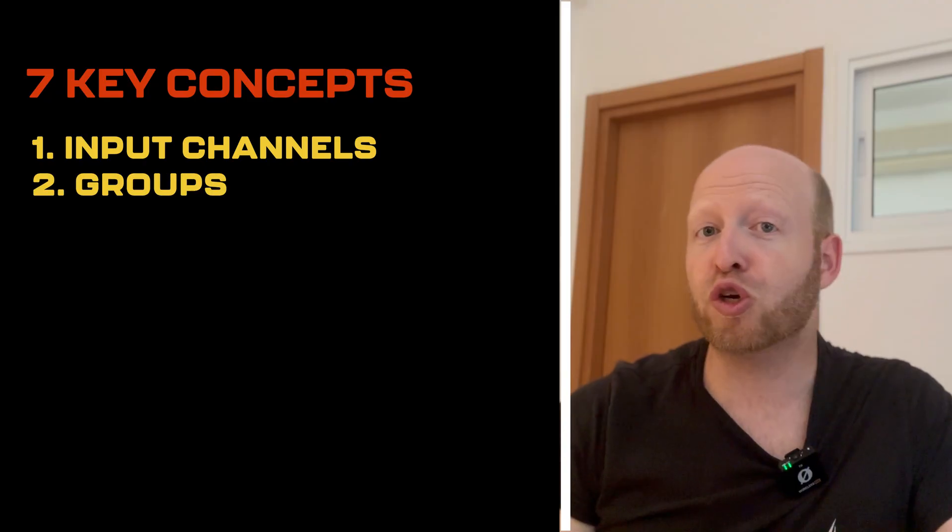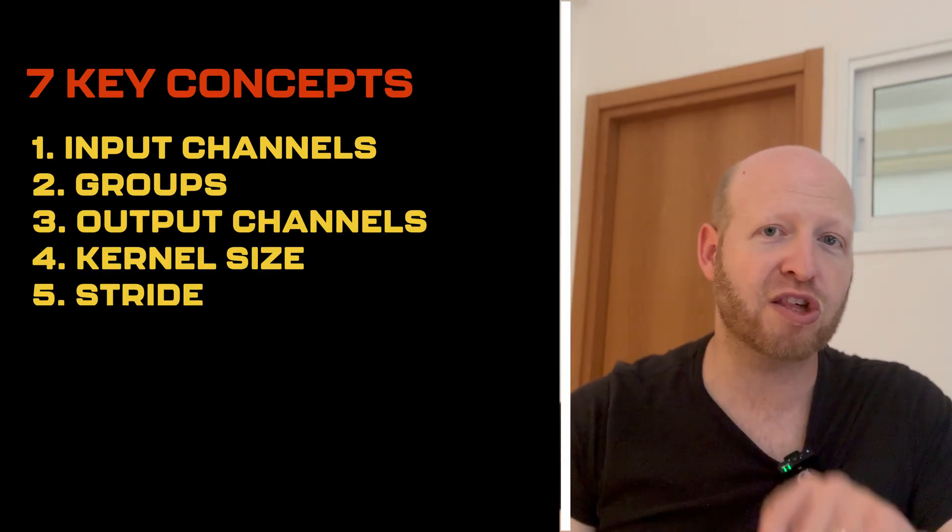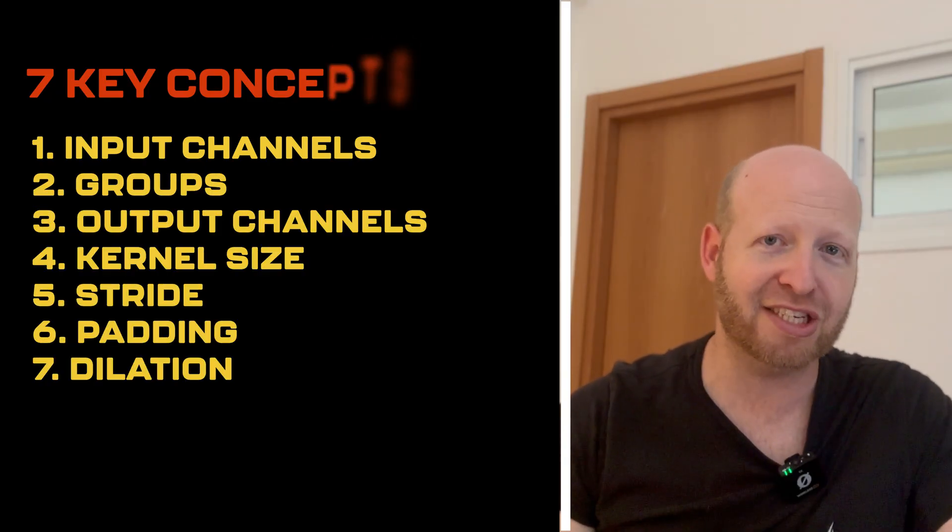Now I want to give you some actual practical tools to walk away with from this video, especially because these technologies are changing so fast. In this next part I'm going to give you the seven key concepts of modern convolutional layers: input channels, groups, output channels, kernel size, stride, padding, and dilation.